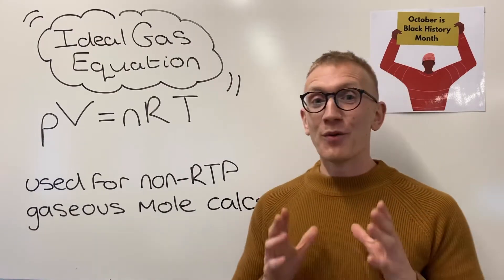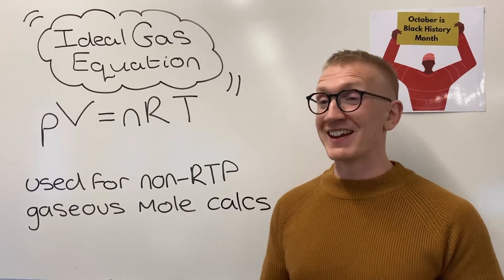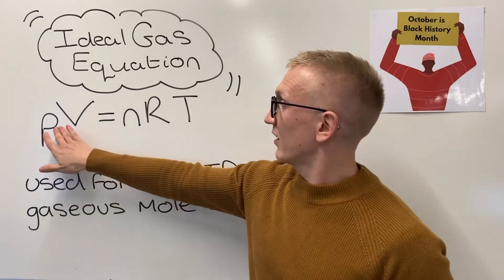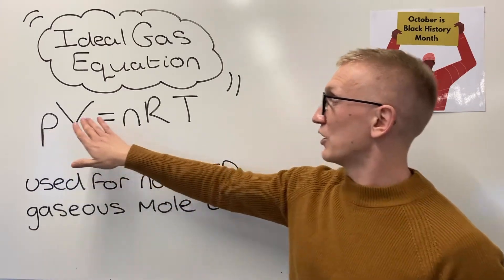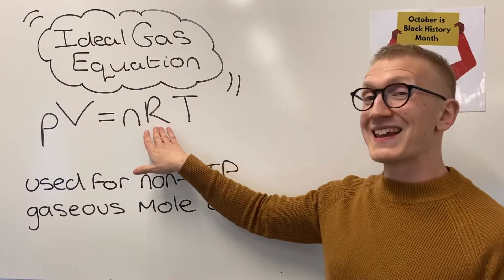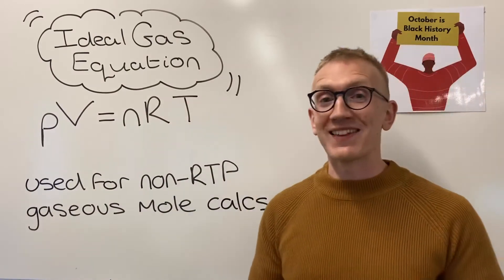So what does our ideal gas equation contain? It's got pressure times volume equals moles times the gas constant multiplied by temperature — PV = nRT.